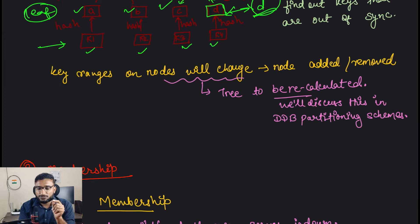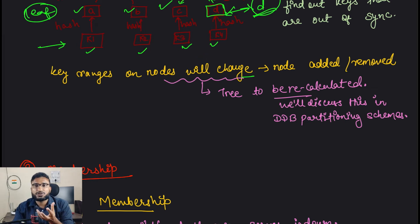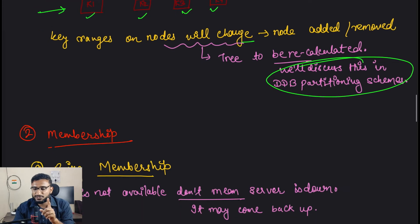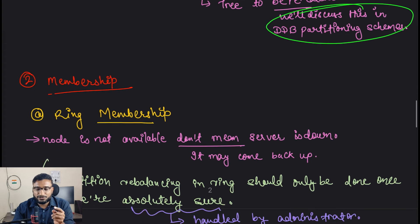That's why we use Merkle trees for solving inconsistencies between replicas. One issue is that key ranges on nodes can change, and in those scenarios you will have to recalculate the Merkle trees. We will discuss this in our next video on partitioning schemes, which will be the final video closing this series.